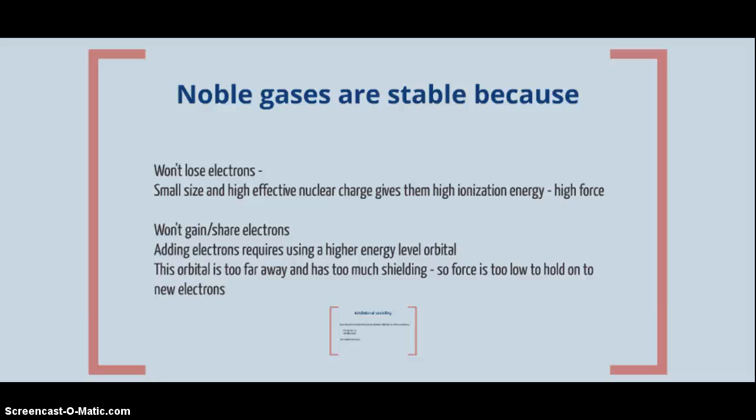Two, they won't gain or share electrons. Why? Because adding electrons requires using a higher energy level orbit. This orbital is too far away and has too much shielding. So the force at this outer energy level is too low to hold on to new electrons. So they won't gain any either. So that's the reason why noble gases are stable.